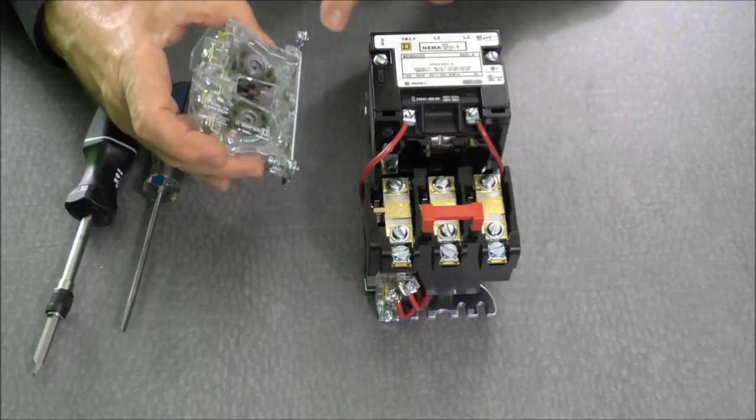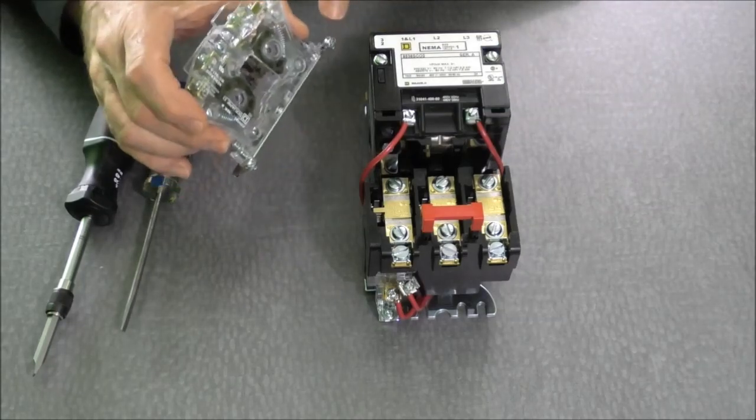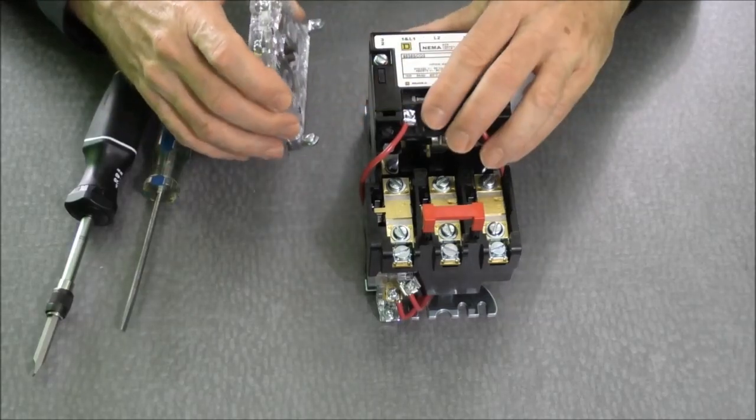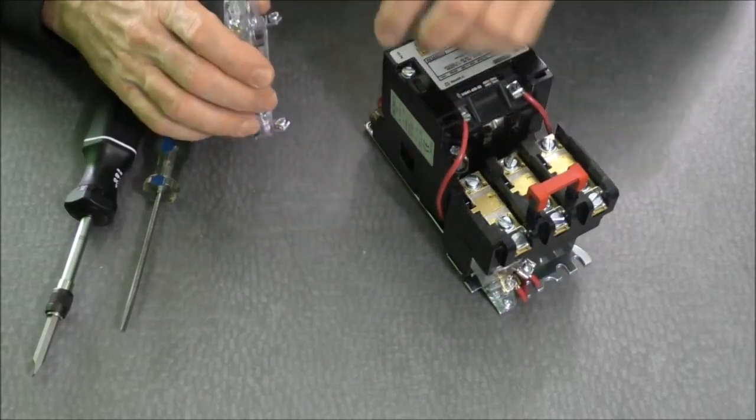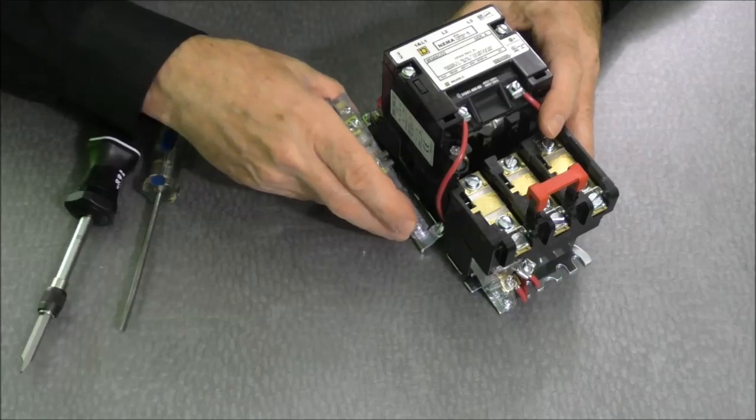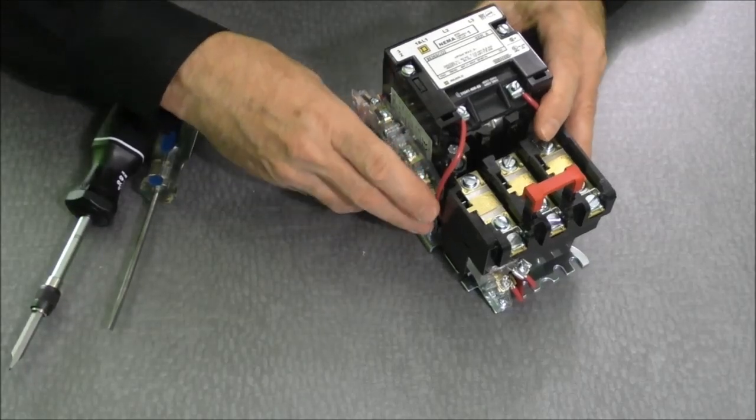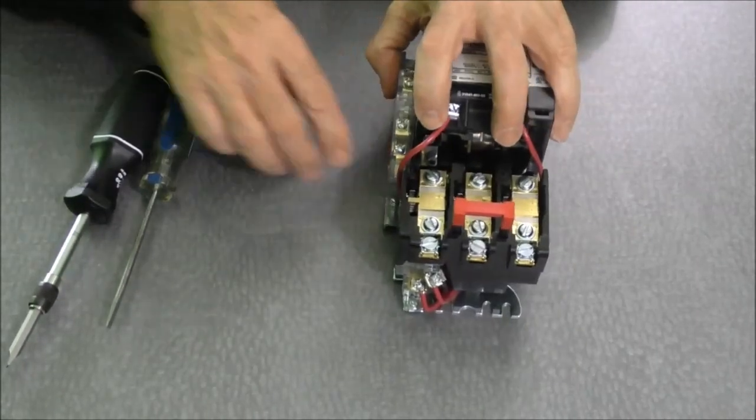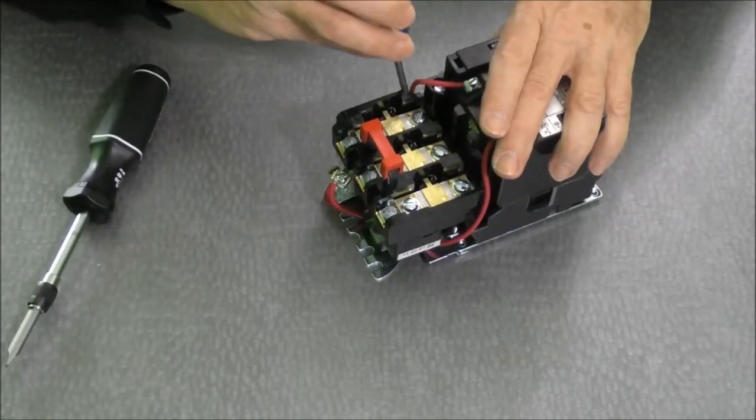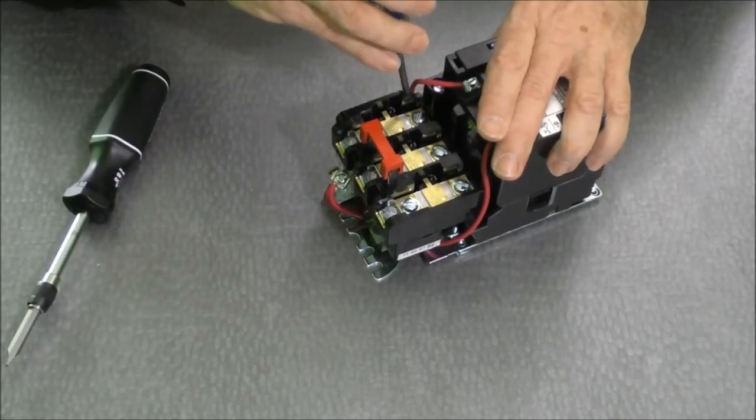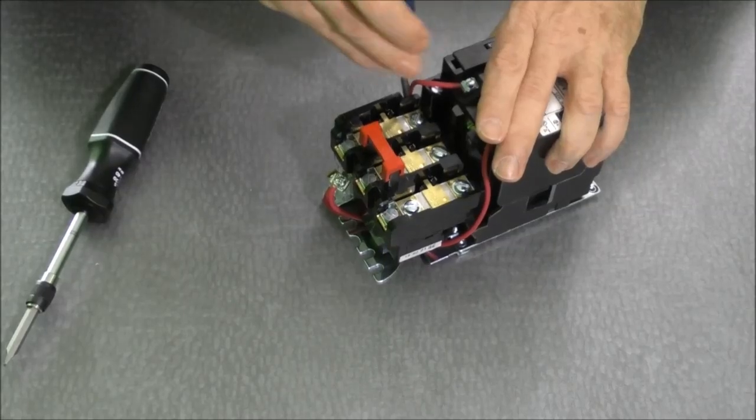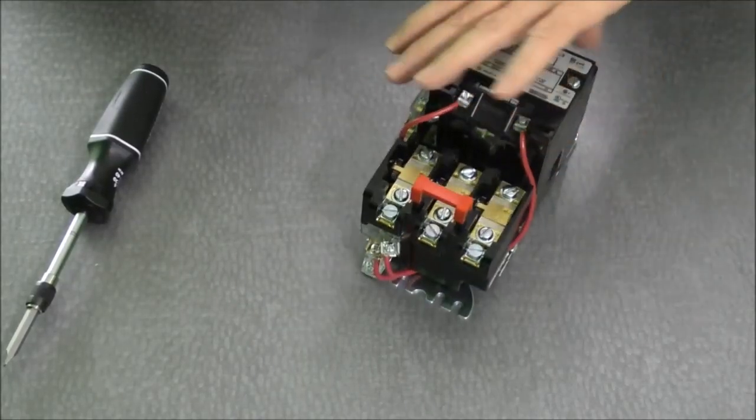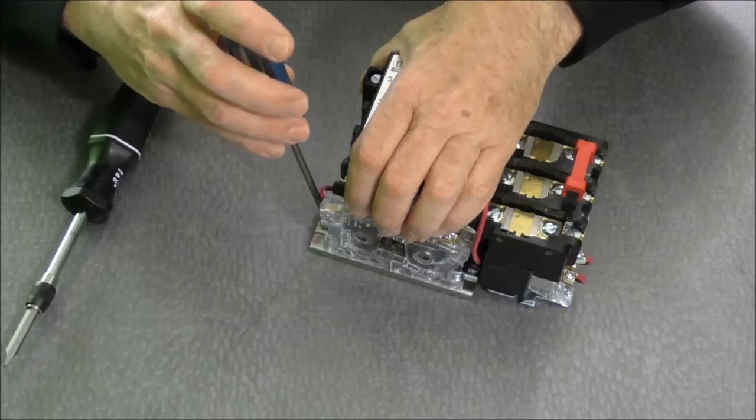So now that the auxiliary contacts are mounted to the mounting plate, I have two screws that I will screw into the starter itself to hold it on the plate. So let's do this. And then I'm going to turn it to my side so that I can screw the screws a little bit easier. And the top screw.